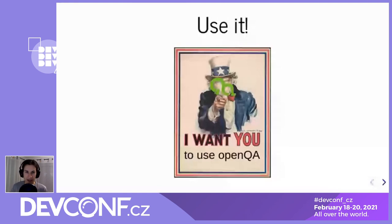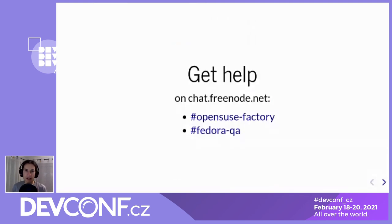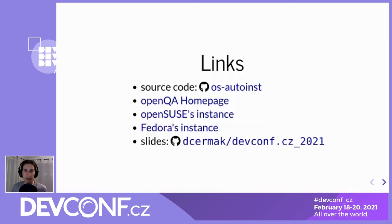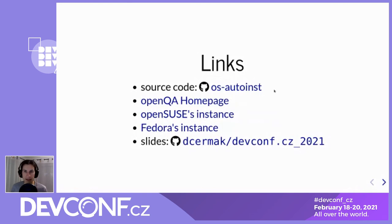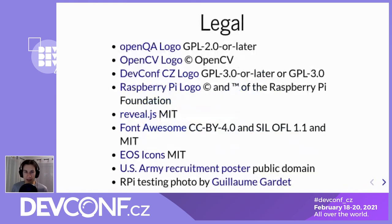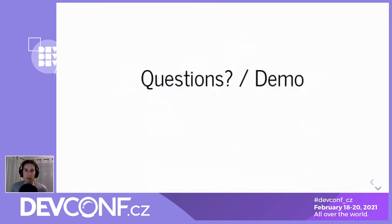If you think it might be a fit, get in touch with us. You can reach contributors and users of OpenQA on IRC — on Freenode in openSUSE Factory and in Fedora QA. I'd also like to give you a few links: you can find the source code of OpenQA in the os-autoinst organization on GitHub; there's a link to the OpenQA homepage, the openSUSE and Fedora instances; and you can find the slides on GitHub if you want a clickable version. Thank you for your attention, and I'm open for questions.